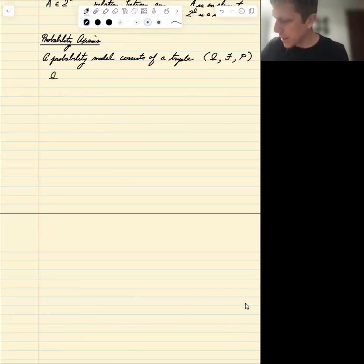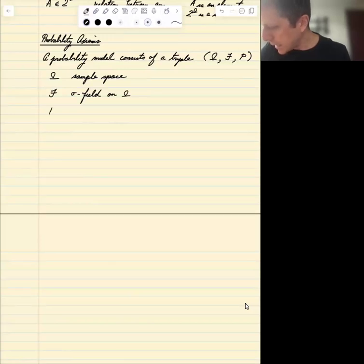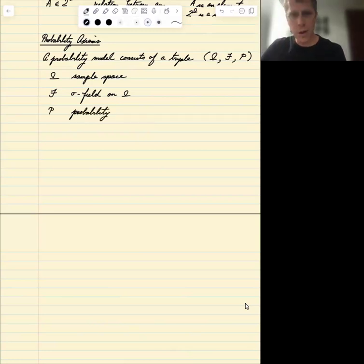The triple is omega is a sample space. F is going to be what's called a sigma field on omega. P is going to be a probability, just your probability measure.